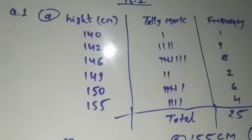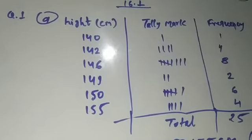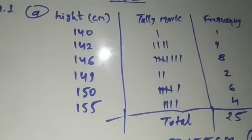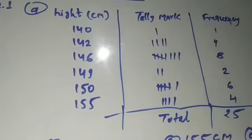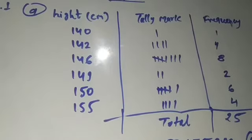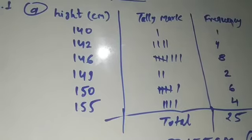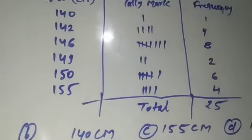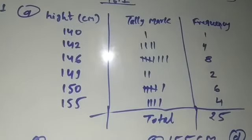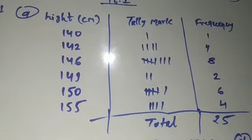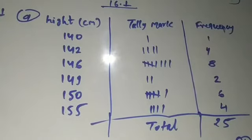The table I have made has three columns: first column is height in centimeters, second column is tally marks, and third column is frequency. Starting from the smallest: 140 cm — 1 girl; 142 cm — 4 girls; 146 cm — 8 girls. For tally marks: if the count is four, draw four lines; if five, draw four lines and cross the fifth. The total comes to 25, which matches the data — so the table is correct.